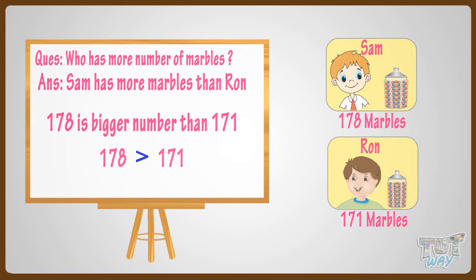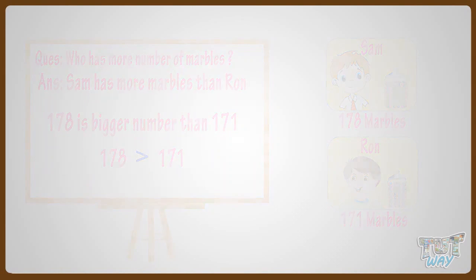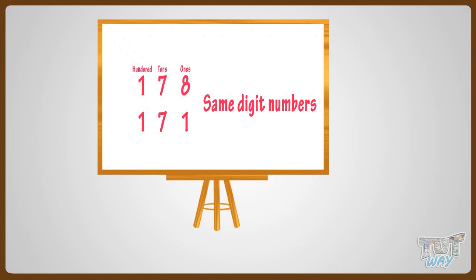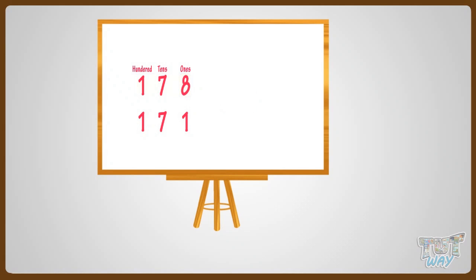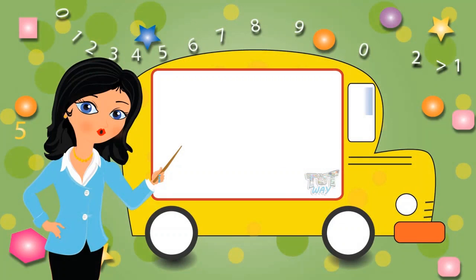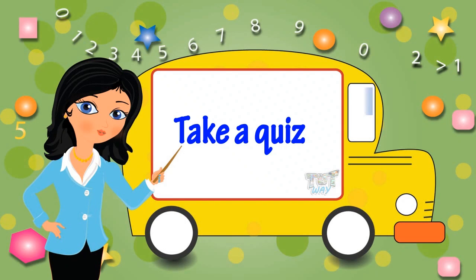So what have we learnt? When the number of digits are the same, we follow the comparing rule: start comparing the digits from the biggest place, and whichever number you get the bigger digit in first — that number is the bigger number. Now go ahead and take a quiz to learn more.